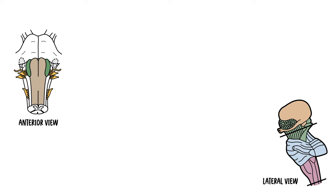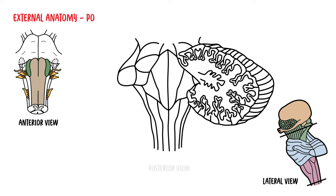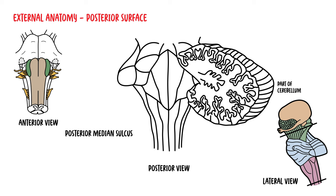Now let's look at the external anatomy of the medulla on the posterior surface. In order to appreciate the posterior surface, the cerebellum, which normally connects to the back of the medulla, must be partially removed. Like the anterior surface, the posterior surface also has a midline structure called the posterior median sulcus, which is continuous below as the posterior median sulcus of the spinal cord.